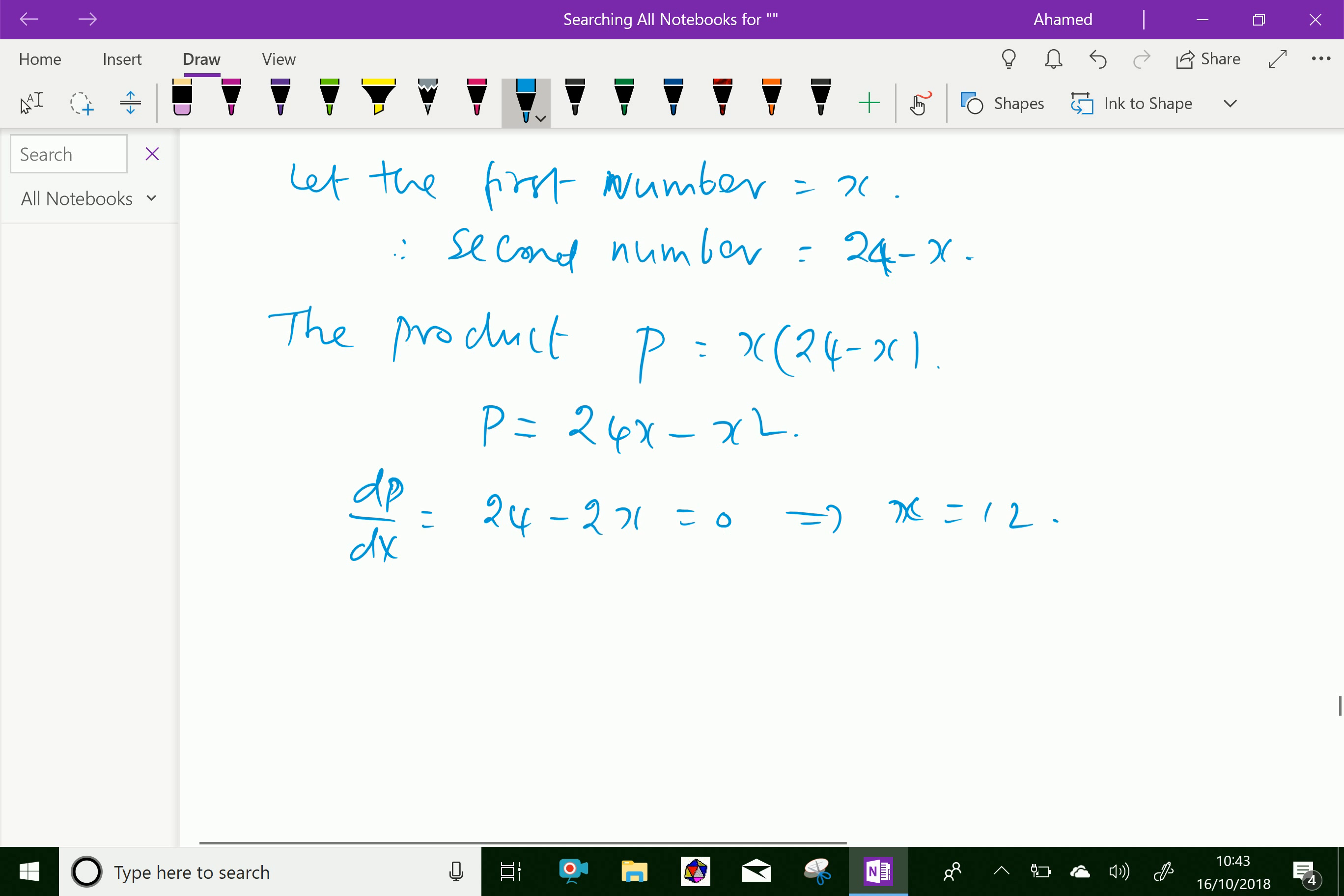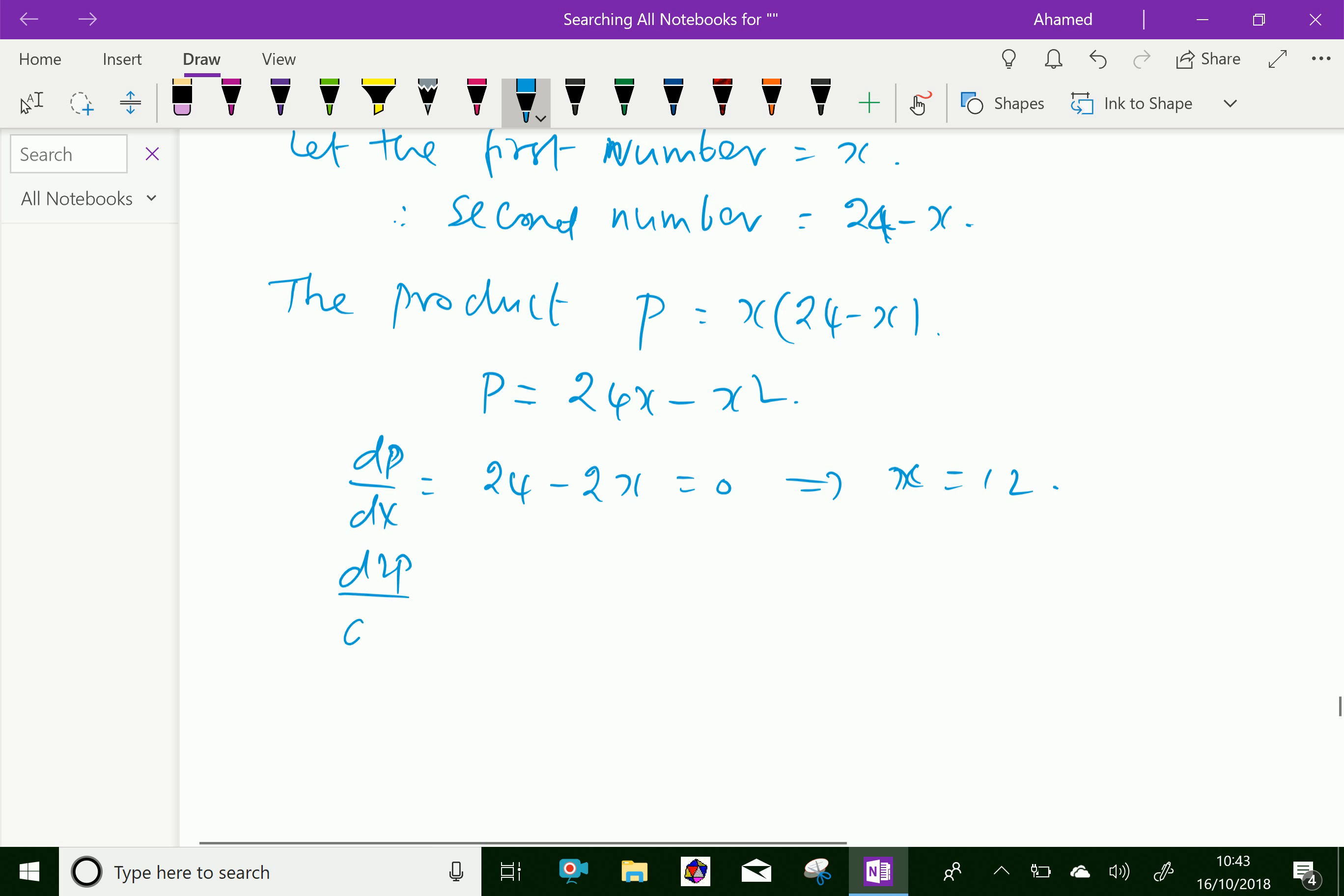Now let us find d squared P by dx squared, which gives minus 2, a negative sign.